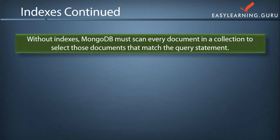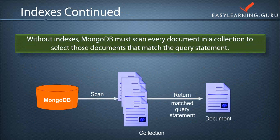Without indexes, MongoDB must scan every document in a collection to select those documents that match the query statement. Without proper indexes, the only way to satisfy the query is to scan all documents linearly until the query conditions are met. Hence, MongoDB must scan every document of a collection to return a matched query statement, which simply means scanning the entire collection.